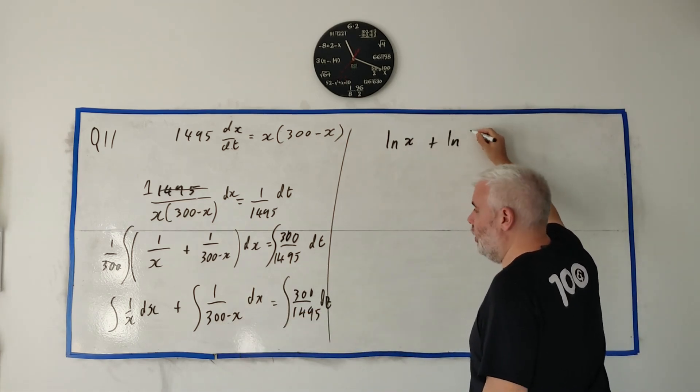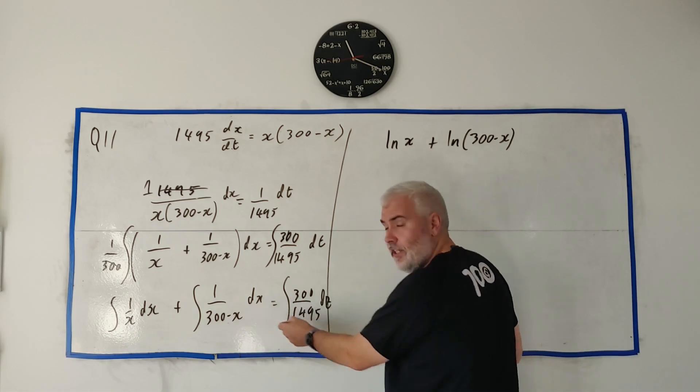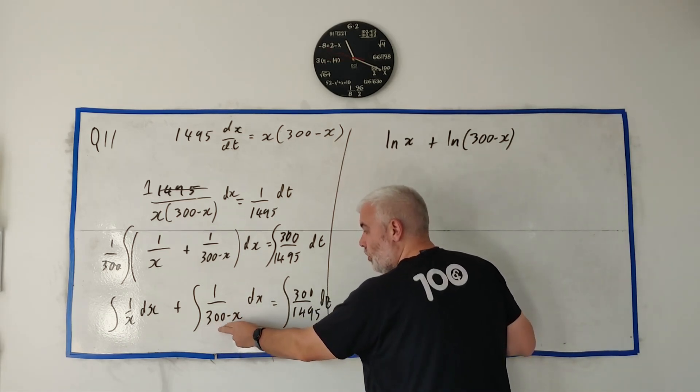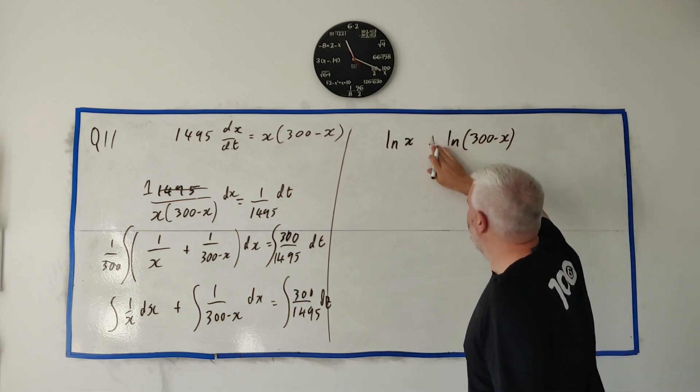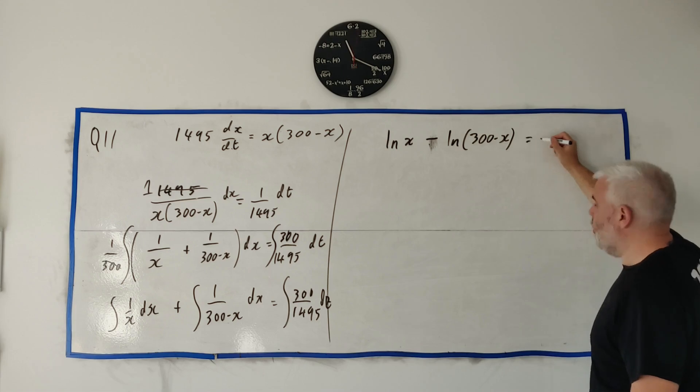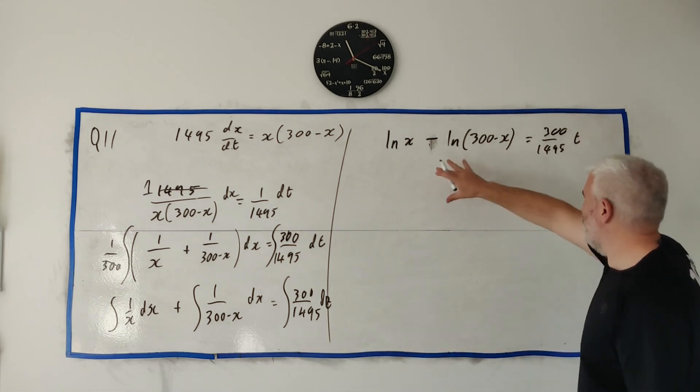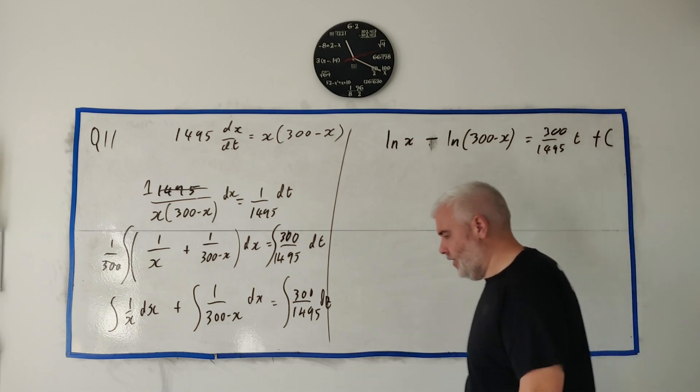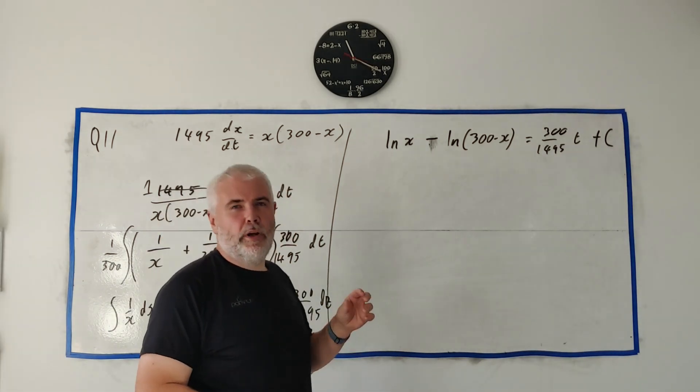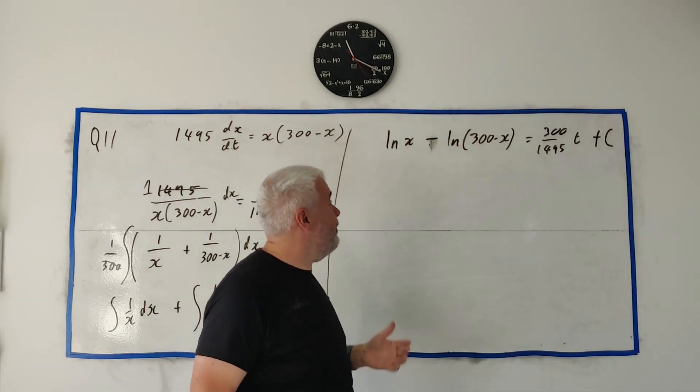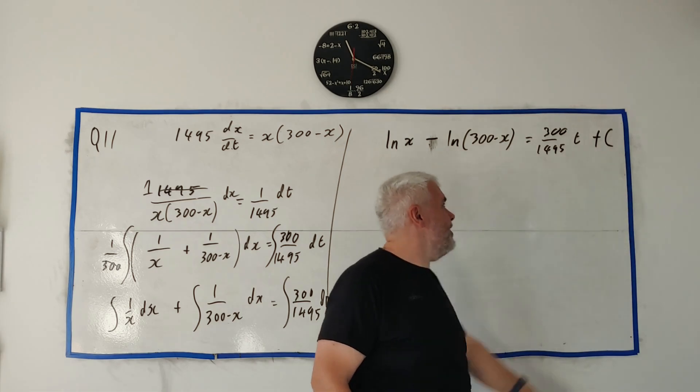And that all equals 300 over 1495 times t. That's the integral of the right side. But there were loads of constants appeared, so we better add in one big constant to all that. Okay, you're nearly finished. You'll get a good few marks for this. They wanted all the logarithms put together, so you would probably gain a mark by doing that. But the big, probably two or three marks that you're still missing is, what's c? We don't want c in our answer. We want to find out what c is.